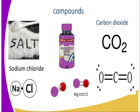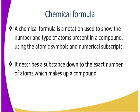So how do we get to write this chemical formula? We should first try to understand what a chemical formula is. It is a notation which is used to show the number and type of atoms present in a compound, using atomic symbols and numerical subscripts. Therefore it tells us how many atoms there are of each element bonded in a given compound.